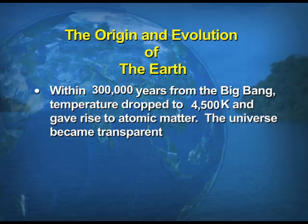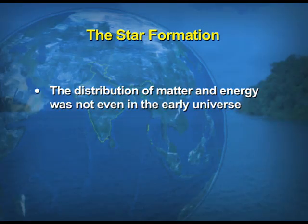Within 300,000 years from the Big Bang, temperature dropped to almost 4,500 Kelvin and gave rise to atomic matter. The universe became transparent. These stages in the Big Bang theory talk about the formation of the universe as a whole and don't give any specific example of only the formation of the Earth. This also talks about the formation of the star — that is, the formation of the present remnant, the sun itself. The distribution of matter and energy was not even in the early universe.